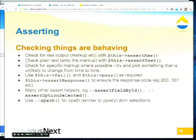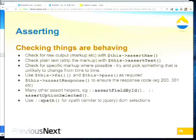You can check for raw output with assertRaw() and plain text with assertText(). When checking for specific markup, be aware you're not picking something that changes from time to time. If you're looking for markup that goes through a theme template and a themer changes it, your test might fail — not because something's broken, but because the markup changed. Pick something specific but not too specific.